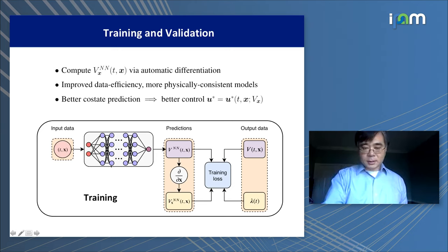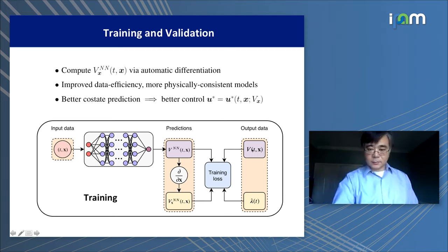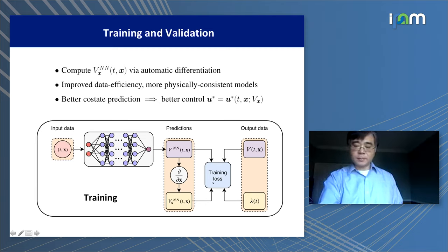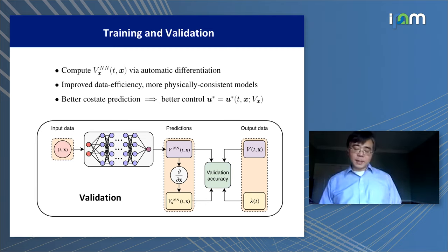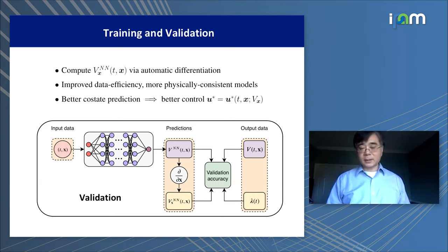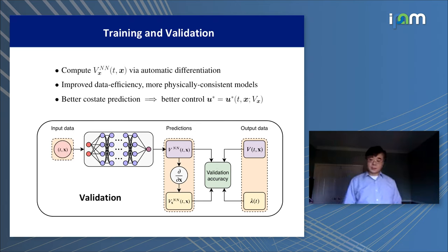The training process is illustrated in a diagram. For any given input data point, it goes through the neural network to generate V_NN. Then V_NN is compared with the given data V, and the gradient of V_NN is also compared with the given adjoint variable lambda. Together they form the loss function to be minimized. The validation process is basically identical — the only difference is that for validation, we use an independently generated validation dataset, and the magnitude of the loss function provides a way to quantify the approximation error.